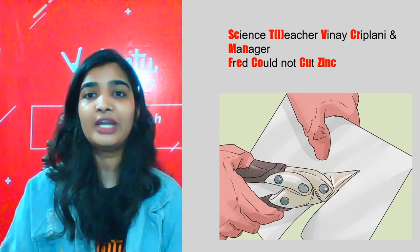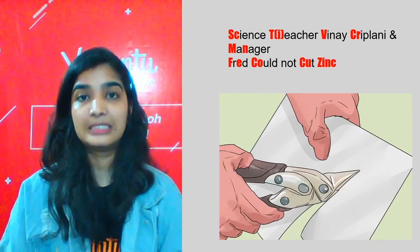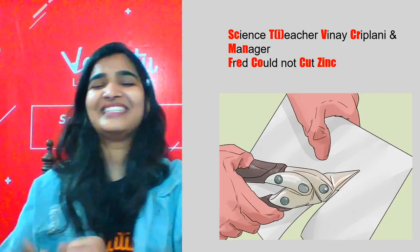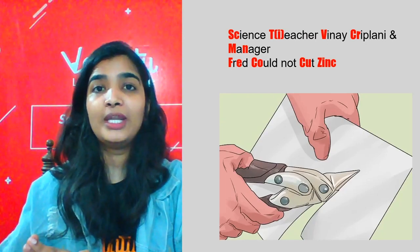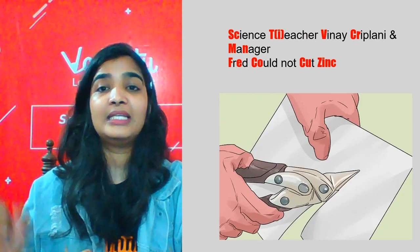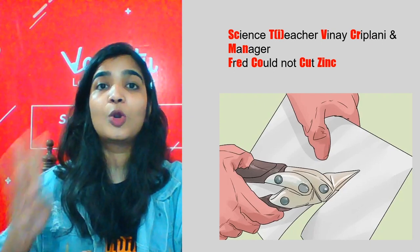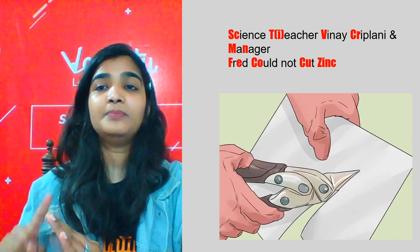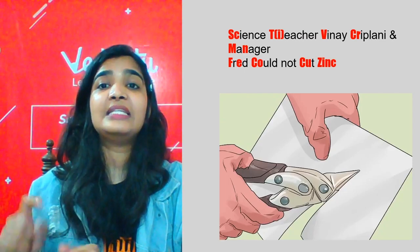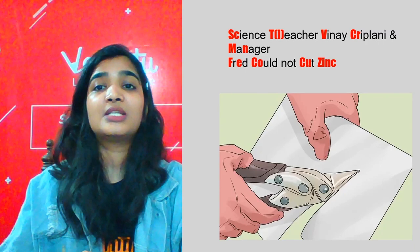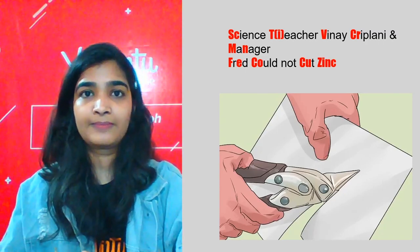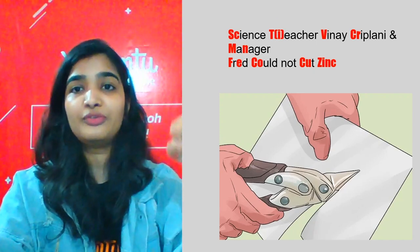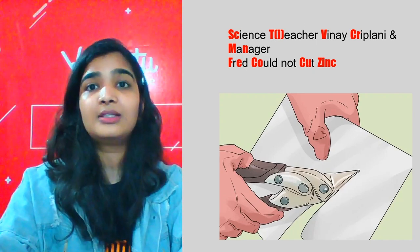Have you heard of these elements? Scandium, titanium, vanadium, chromium, manganese, iron, cobalt, nickel, copper, zinc. The mnemonic for period 4 D-block elements is: 'Science teacher Vinay Kriplani and manager Fred could not cut zinc' — Sc, Ti, V, Cr, Mn, Fe, Co, Ni, Cu, Zn.